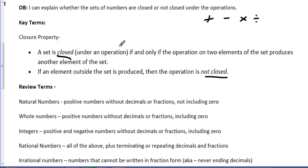That may be very difficult to comprehend right now, but once you see it with numbers and examples, I think we'll come back to this definition. It'll make more sense. If an element outside of the set is produced by that operation, then we'll say that it's not closed.